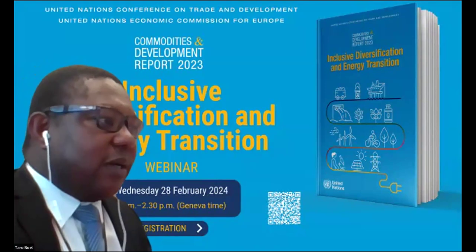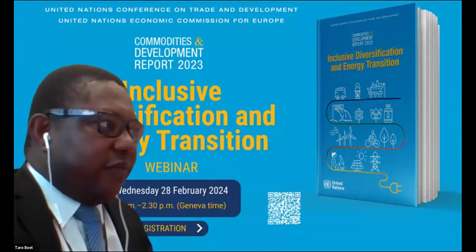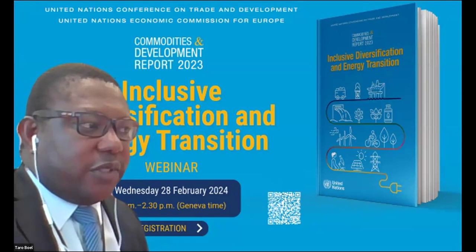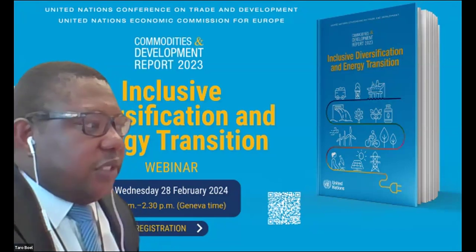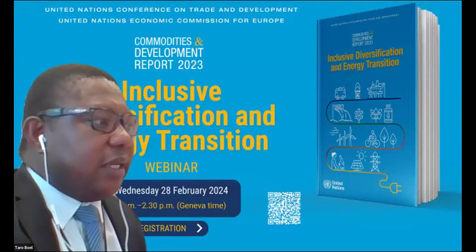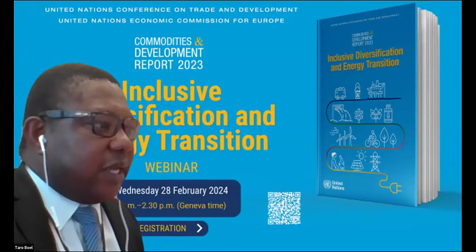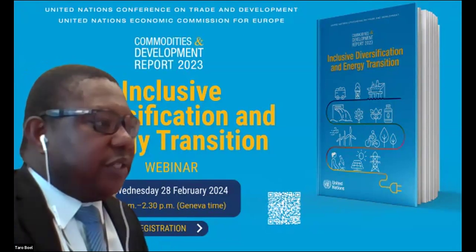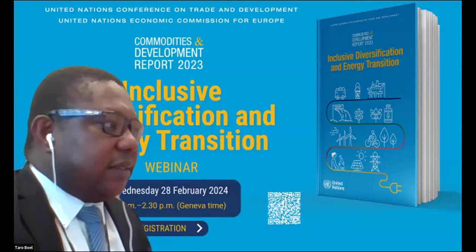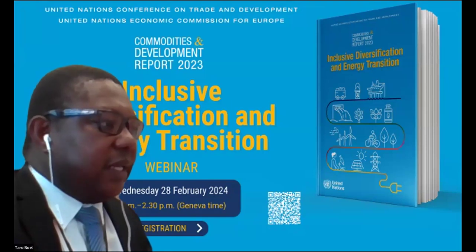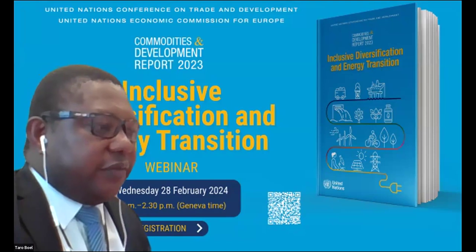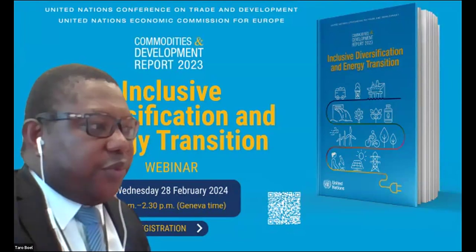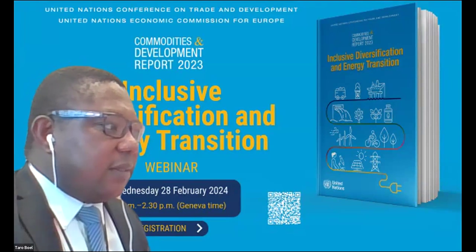I would like to introduce the people who are going to make the opening remarks. I'll start with Clovis. Clovis is the newly appointed chief of the commodity research and analysis section of the commodity branch, within the Division of International Trade and Commodities at UNCTAD in Geneva. He's an economist who specializes in economic diversification and strategies for building productive capacities in developing countries.